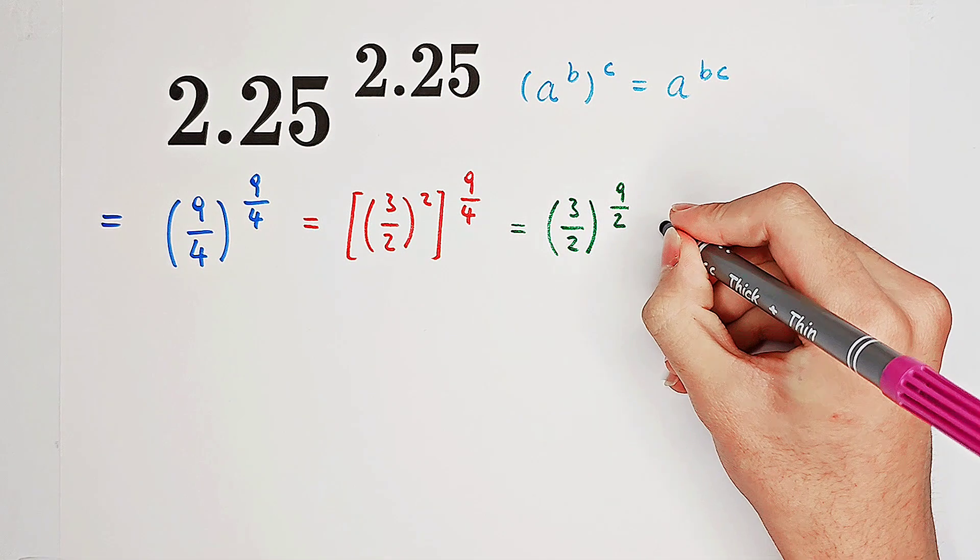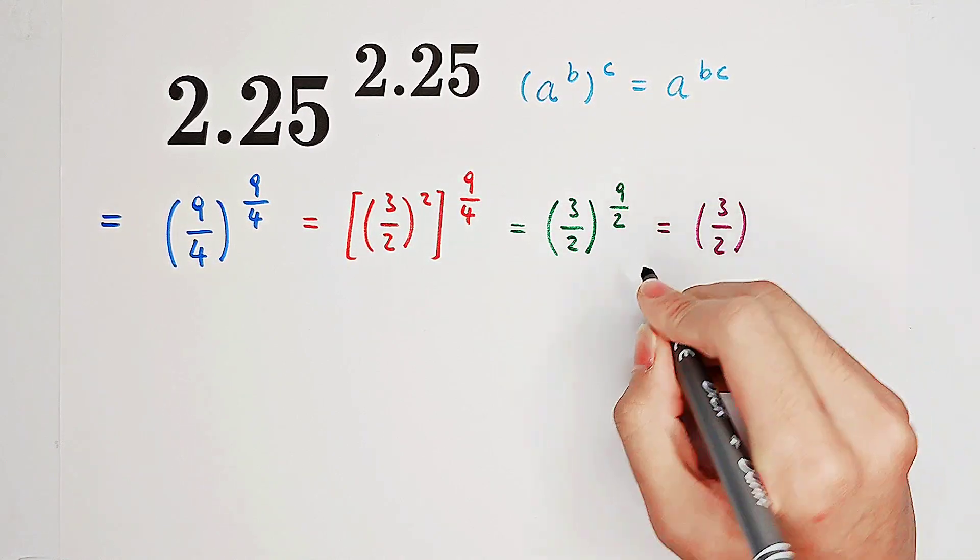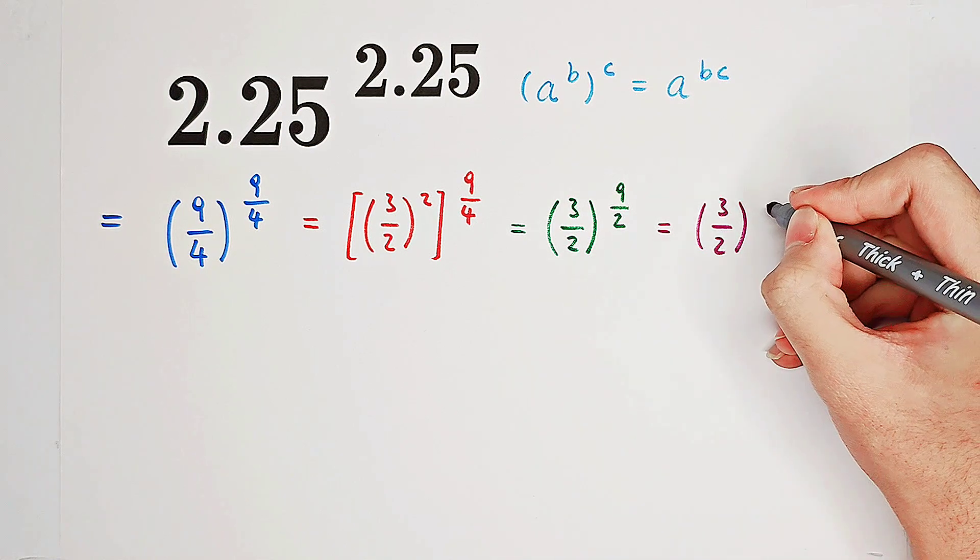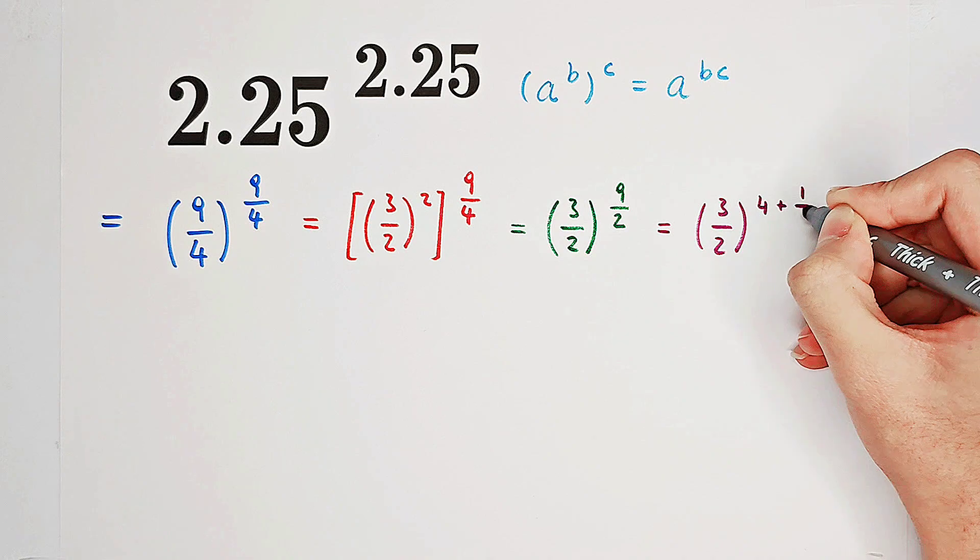And then I'm willing to write this 9 over 2, this exponent, as a sum of an integer and a fraction. It is 4 plus 1 over 2.